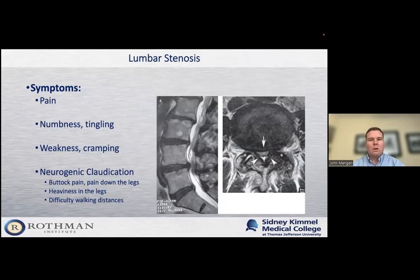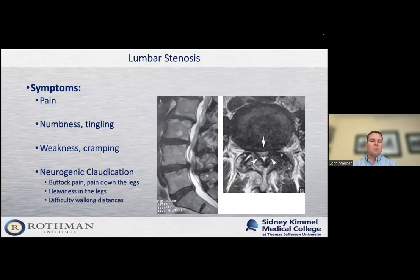A couple of additional symptoms: pain can be in the back or the legs. Patients may develop numbness and tingling as the nerves continue to get pinched. They can get weakness or cramping in leg muscles. They can develop a syndrome called neurogenic claudication — a group of symptoms typical of spinal stenosis. These include pain in the buttock, pain down the legs — typically in the back of the legs, but it can be on the sides or front. People feel heaviness in their legs, often saying they feel like they're dragging their legs after they walk 100 yards. It varies depending on how severe their stenosis is.